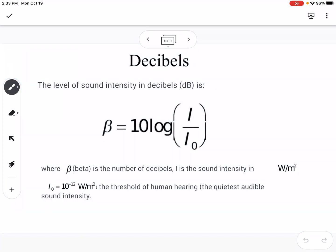The last thing is just talking about how logs apply to different things. The level of sound intensity in decibels is given with a log equation where beta is equal to 10 times the log of I over I sub 0. The intensity is in watts per square meters. And this right here is the threshold of human hearing, the quiet audible sound intensity.